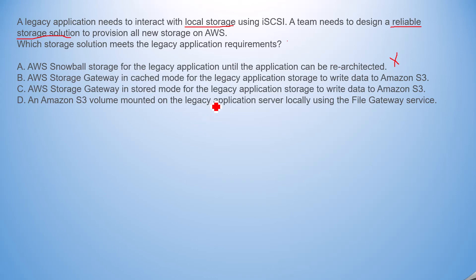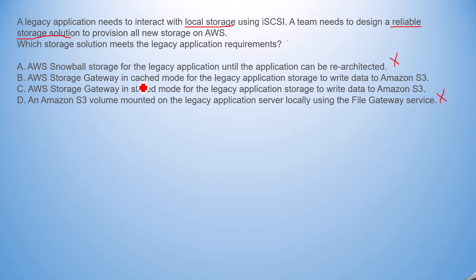Option D says an Amazon S3 volume mounted on the legacy application server locally using a file gateway. This is the wrong answer. It says all data will reside in the S3 volume, but the hint says data needs to be available on local storage. So we go back to option B.